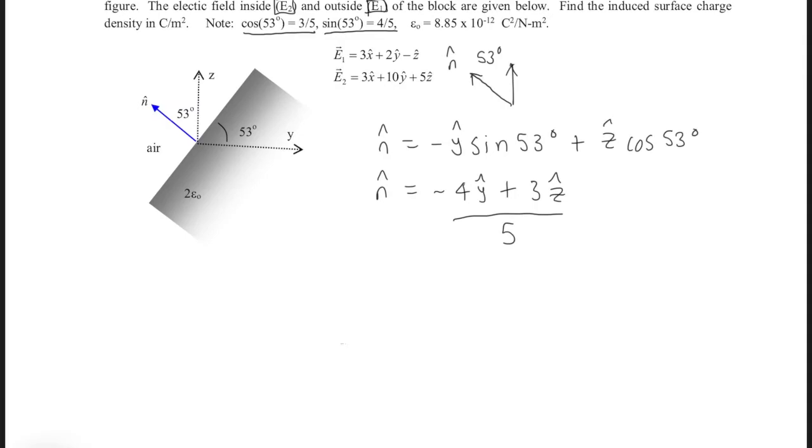So we want to find the electric field with respect to this normal vector that we got. So what we can do is we can say E1n, the electric field with respect to the normal vector, would be E1 vector dot n̂ vector. Which would give us, from our E1 equation, 3, 2, and -1. So if I were to write this above, it would be x, y, and z.